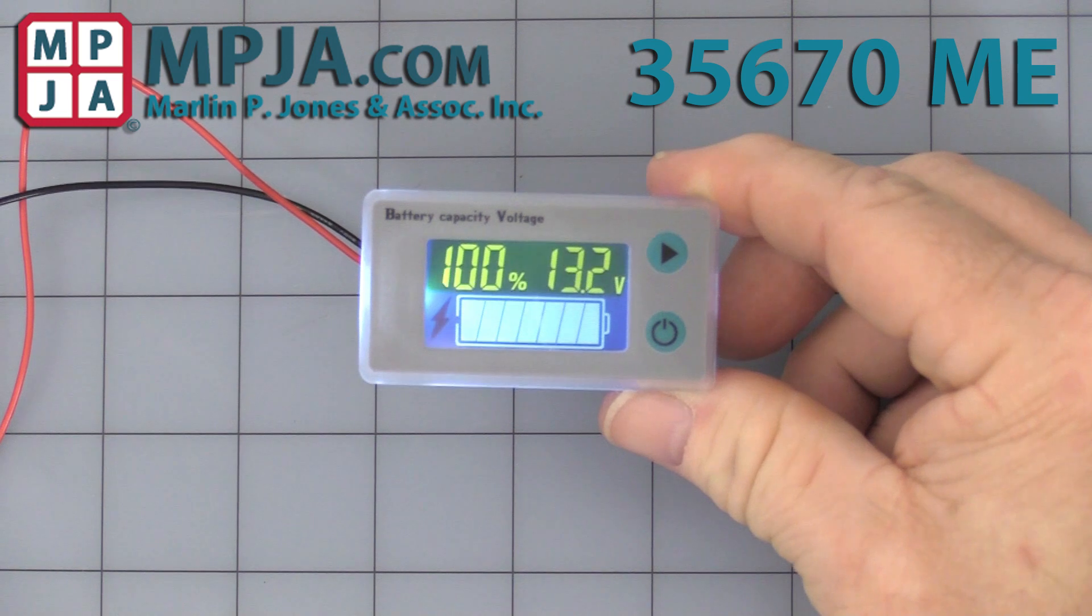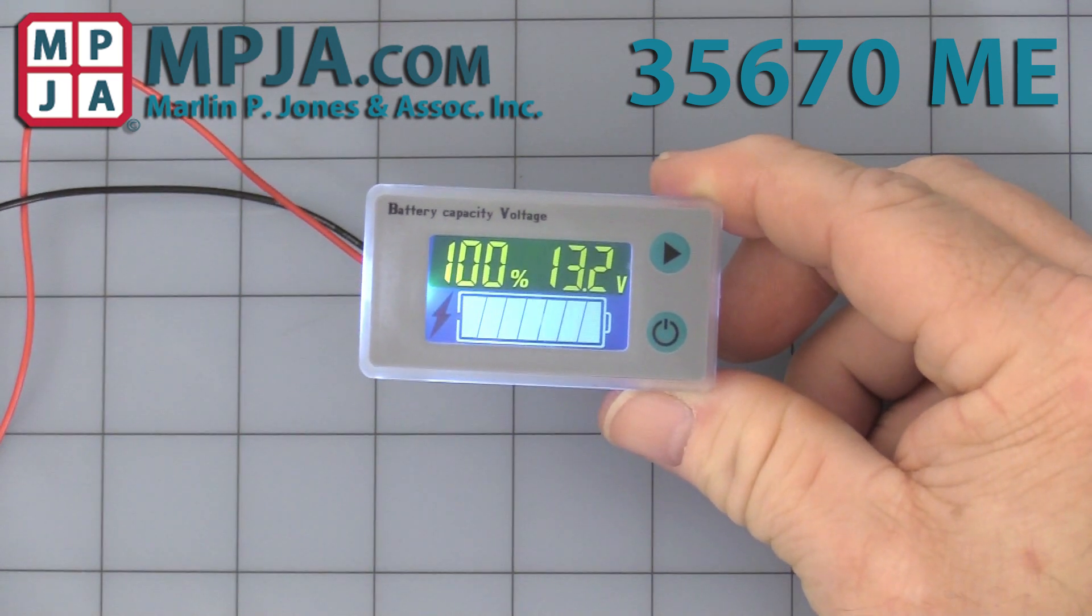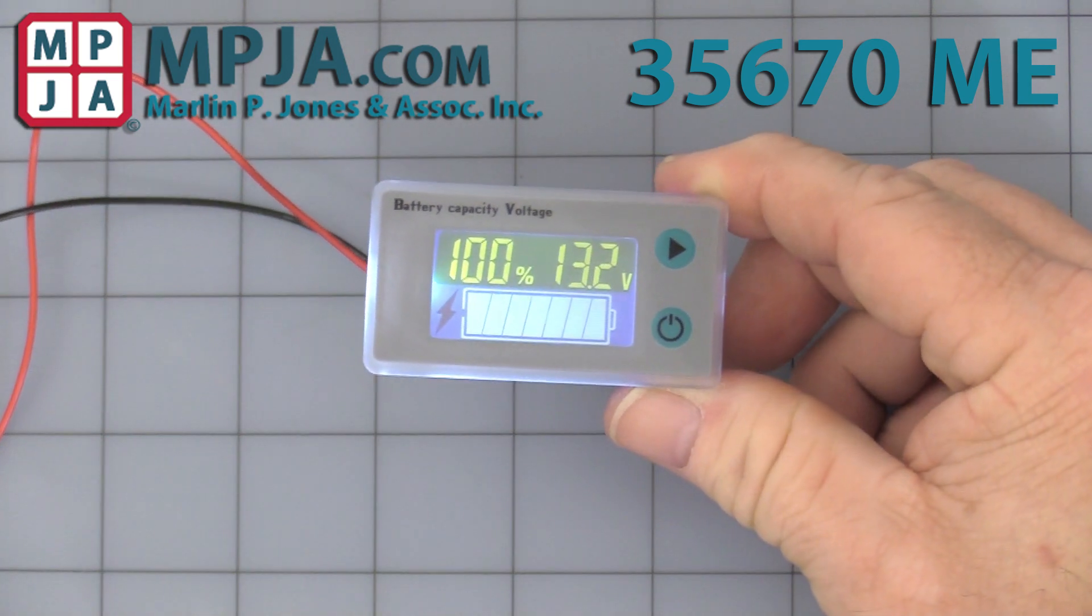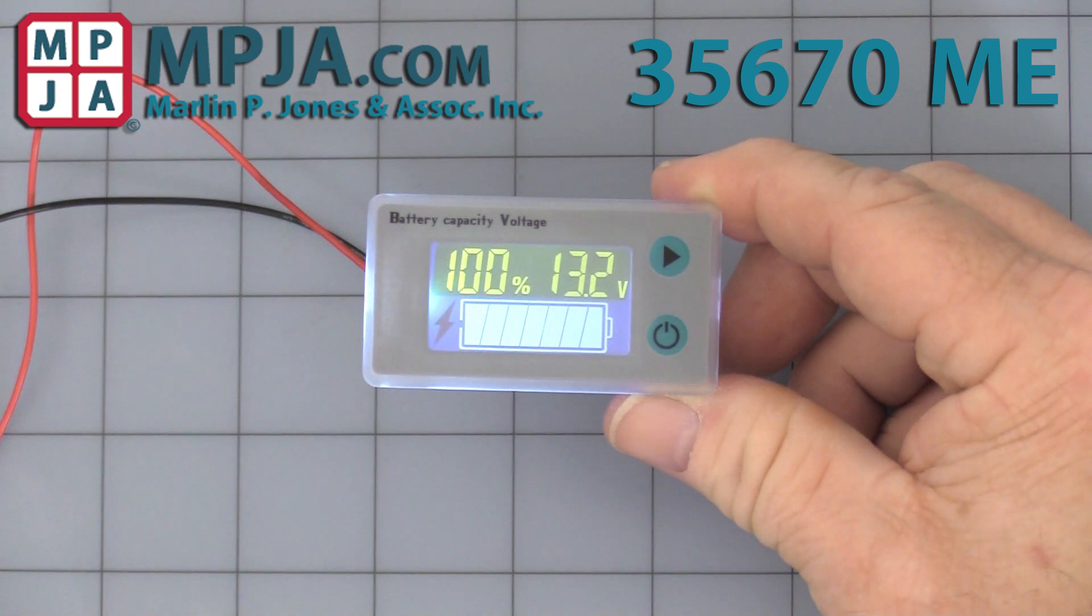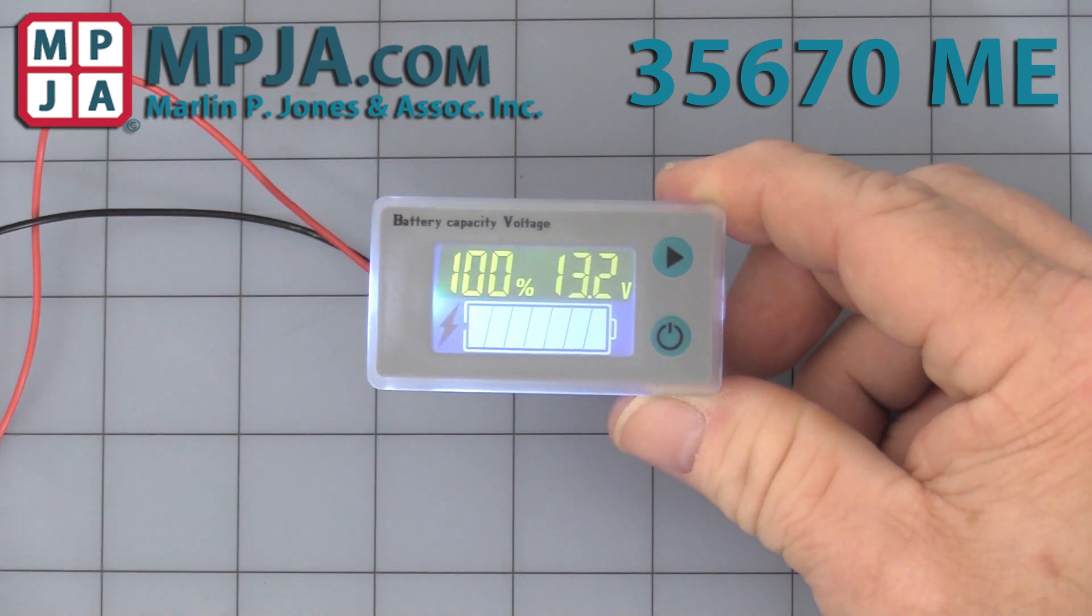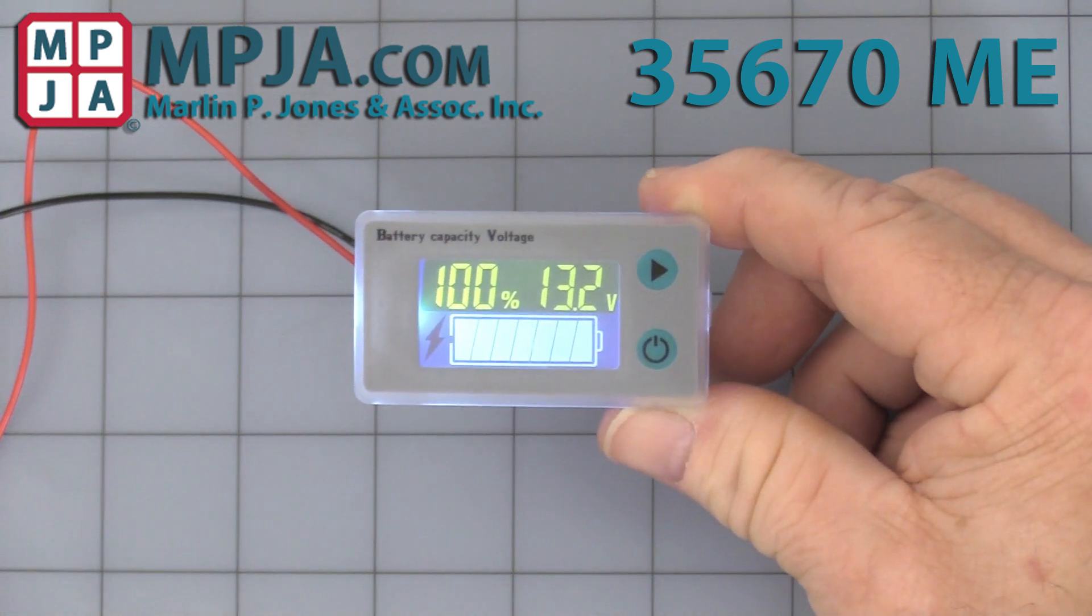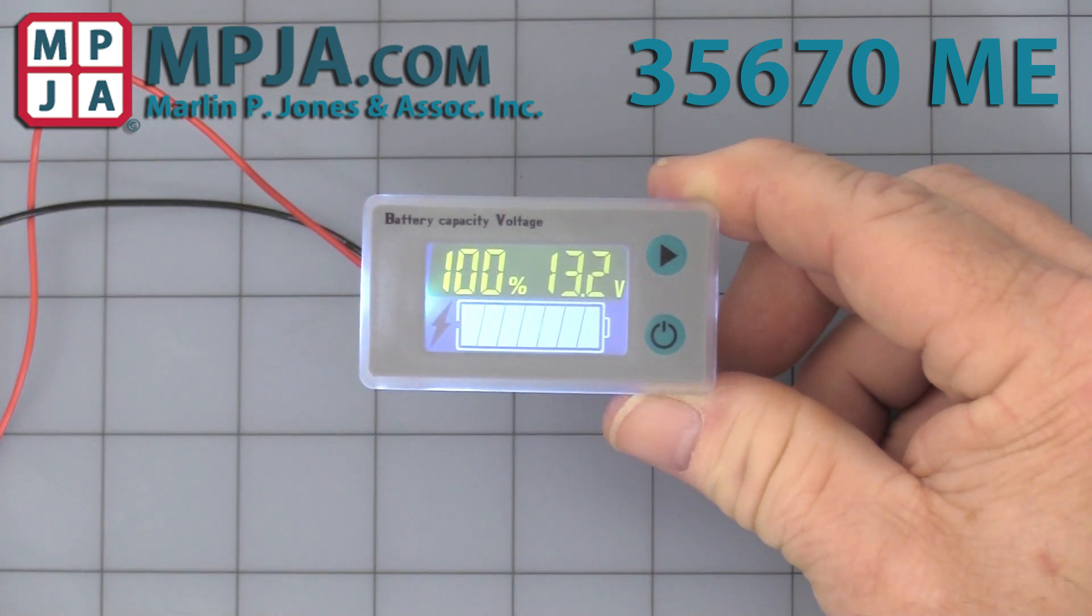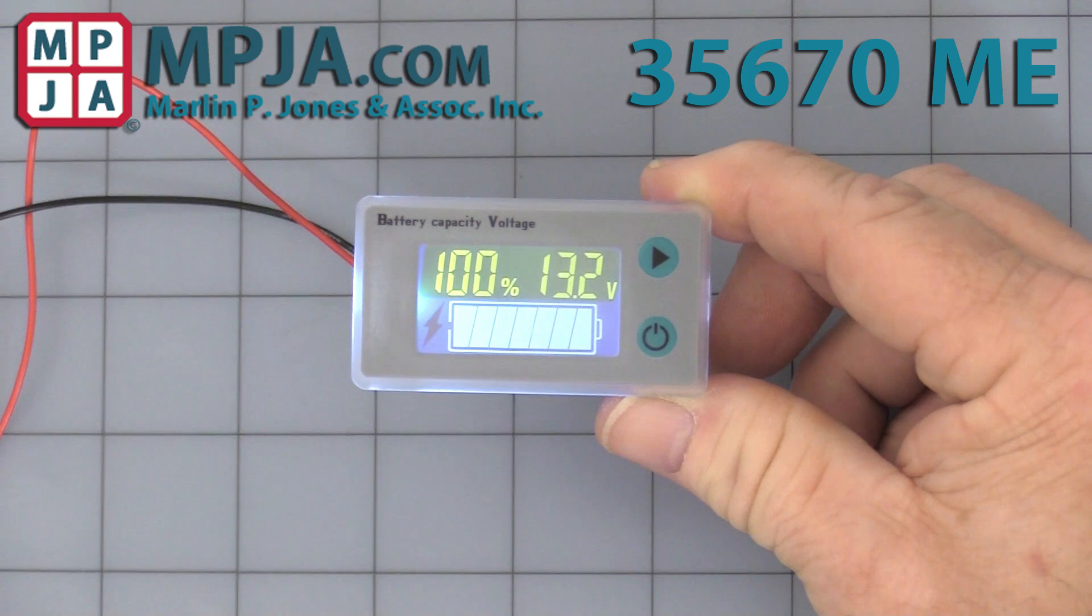Hello, today's video is on stock number 35670ME battery capacitance meter. It comes from the factory set at 12 volts DC lead-acid battery setting. I'll show you later in the video how to change that.